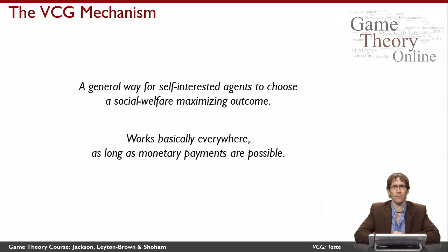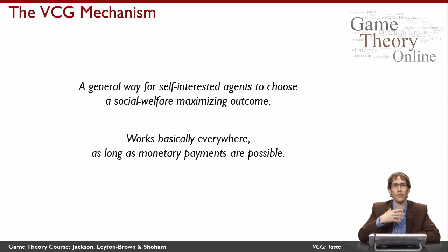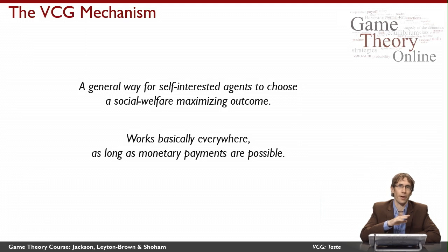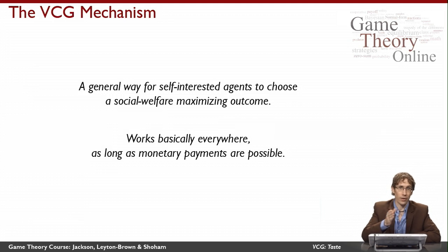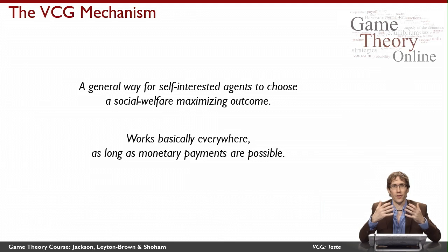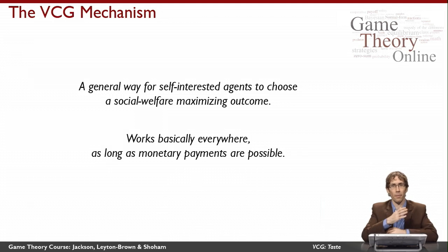So what is the Vickrey-Clarke-Groves mechanism for? Essentially, it solves a problem we encounter in mechanism design pretty often, where I as the designer am interested in implementing an efficient outcome. I have a set of self-interested agents, each with private information about how much they value each possible outcome. What I want is to always pick the outcome that maximizes the sum of the agents' valuations — something I as the designer don't know. So I need the agents to tell me how much they value different things, and I want to pick the outcome that maximizes the sum of their values.